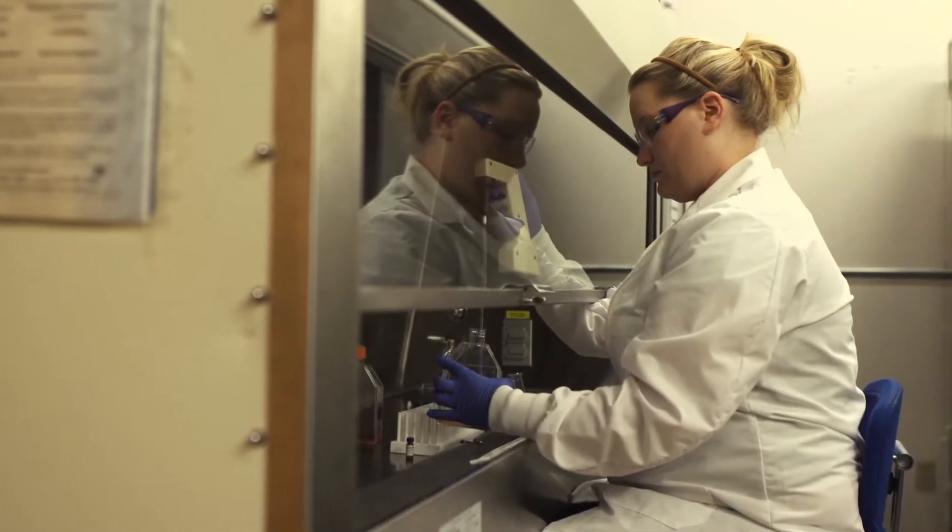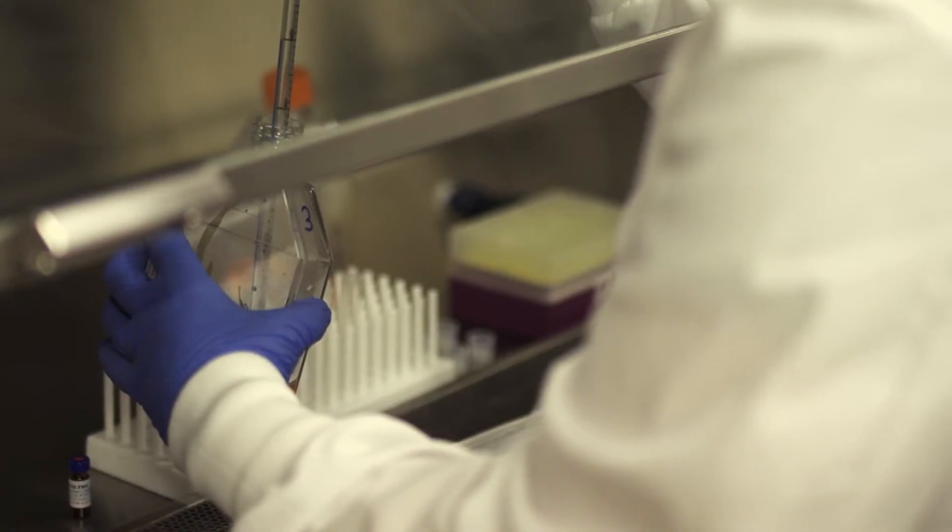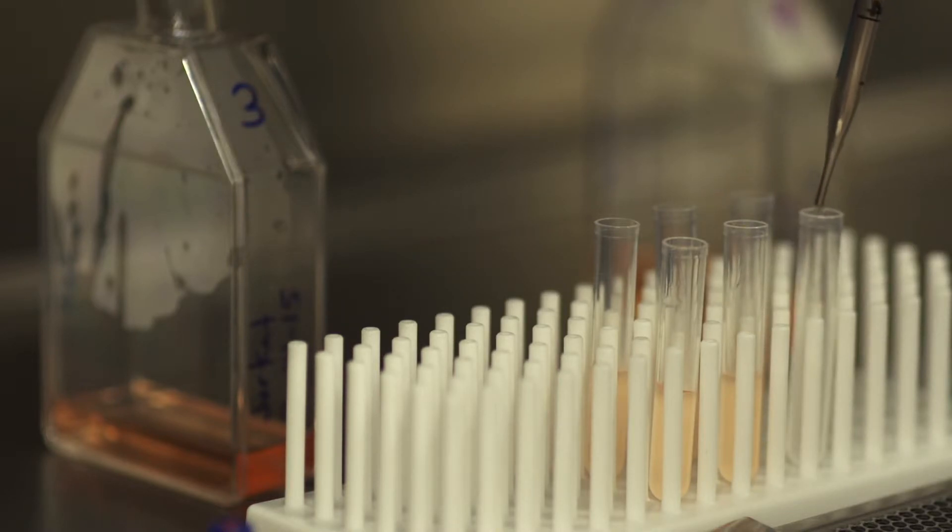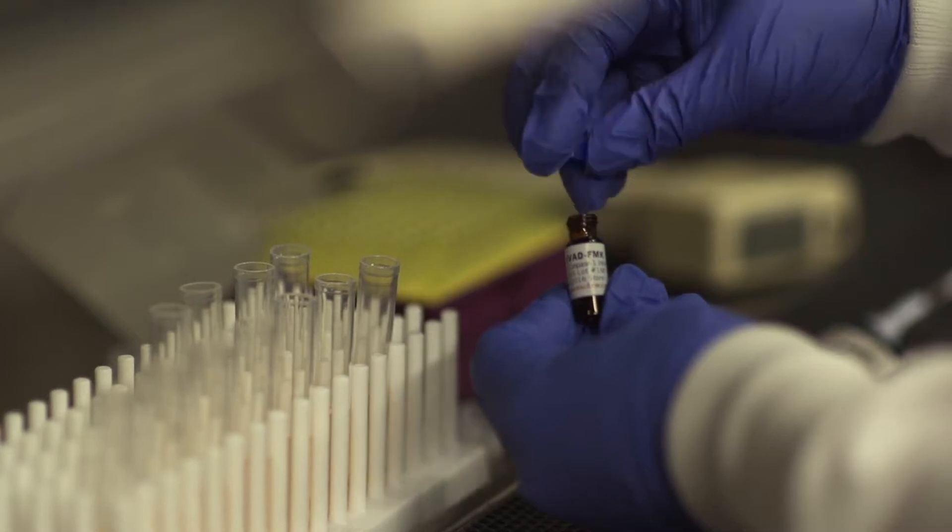To use FLICA, first grow your cells to your target concentration. These cells can be in suspension, adherent, thin tissue sections, or frozen sections. Then expose your cells to the experimental conditions and induce your positive control with staurosporine or camptothecin.